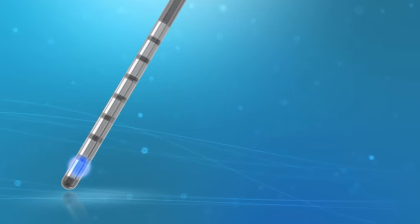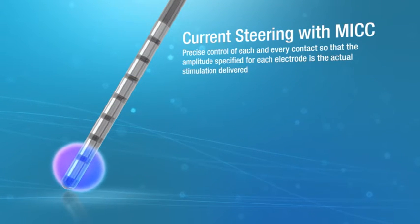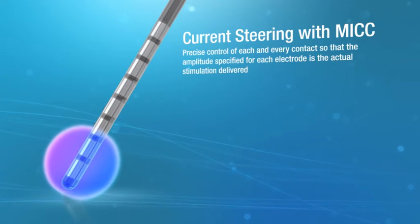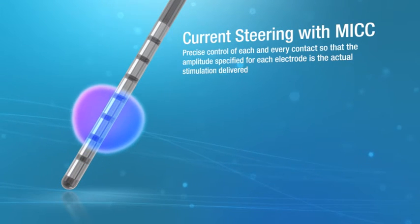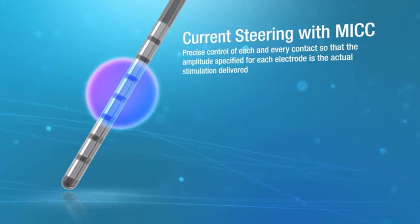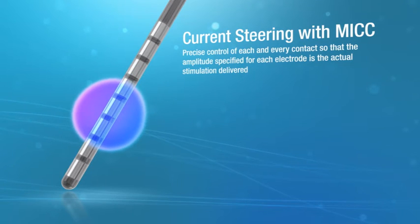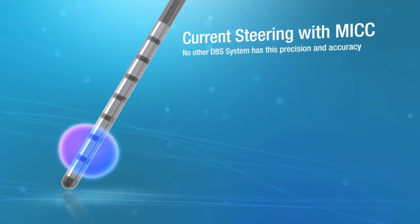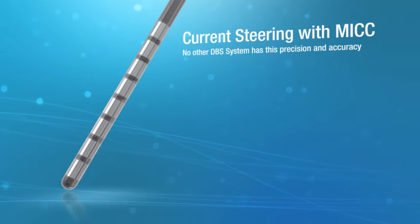Unlike interleaving, current steering with MiCC allows precise control of each and every contact, so the amplitude specified for each electrode is the actual stimulation delivered. No other DBS system has this precision and accuracy.